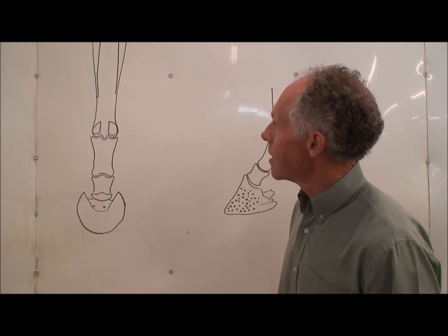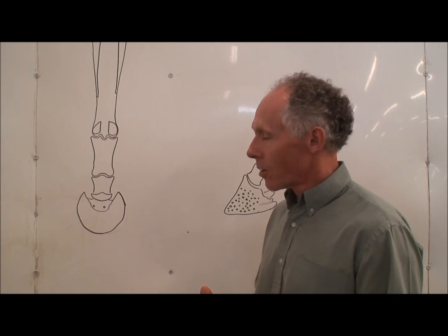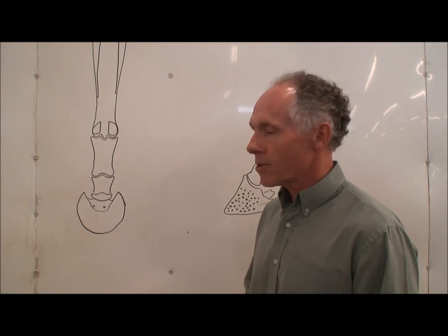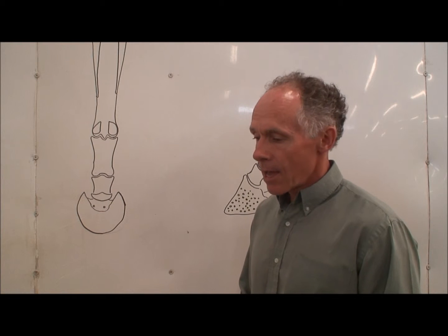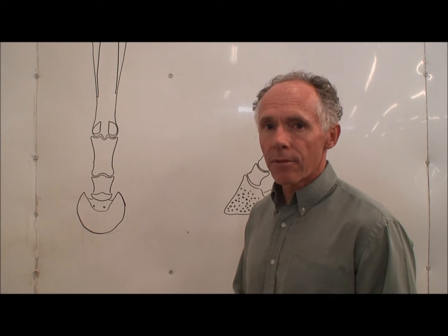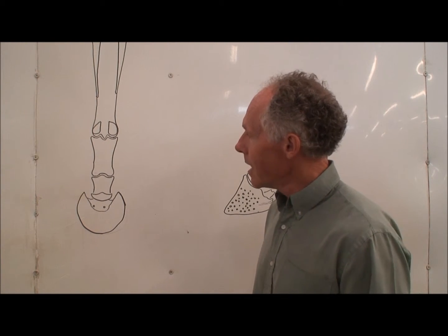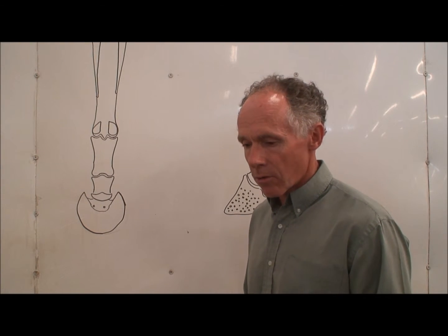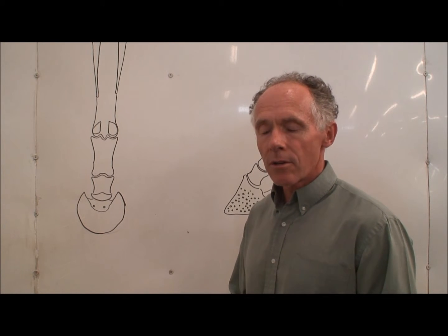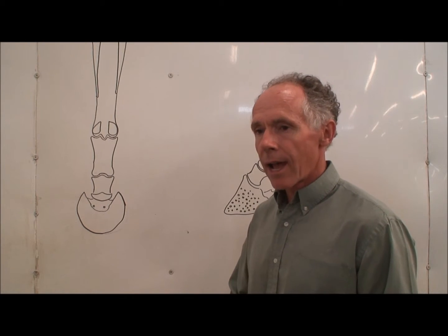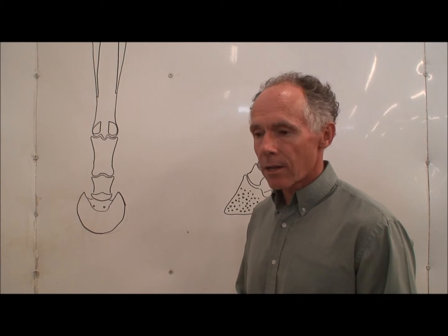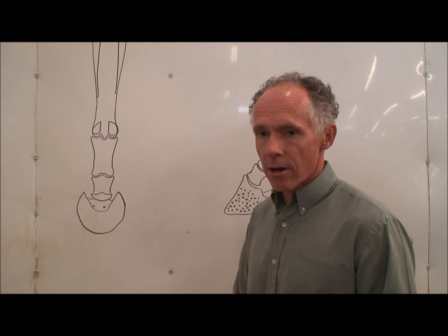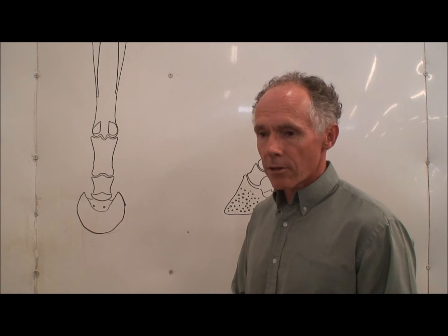We'll start out with the arterial system, and if you learn the arterial system you will pretty much know the complete system, because the venous system — the drainage system — is more or less a copy of the arterial system. Circulation is first promoted by the heart pumping blood around the horse's body, and the lungs infusing the blood with oxygen and removing carbon dioxide. So it's essentially a closed system with a pump — the heart — and then the lungs putting oxygen in.